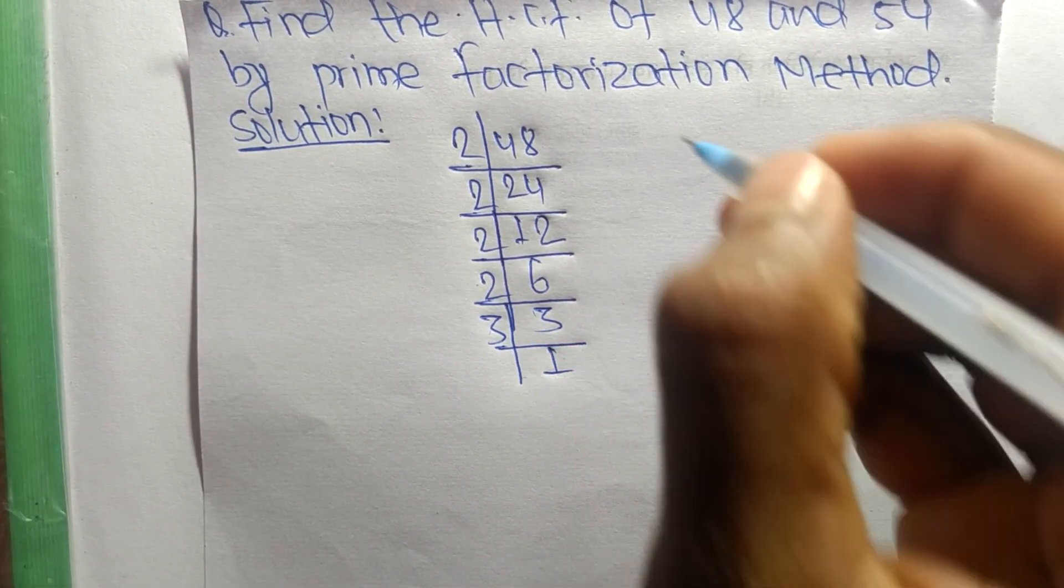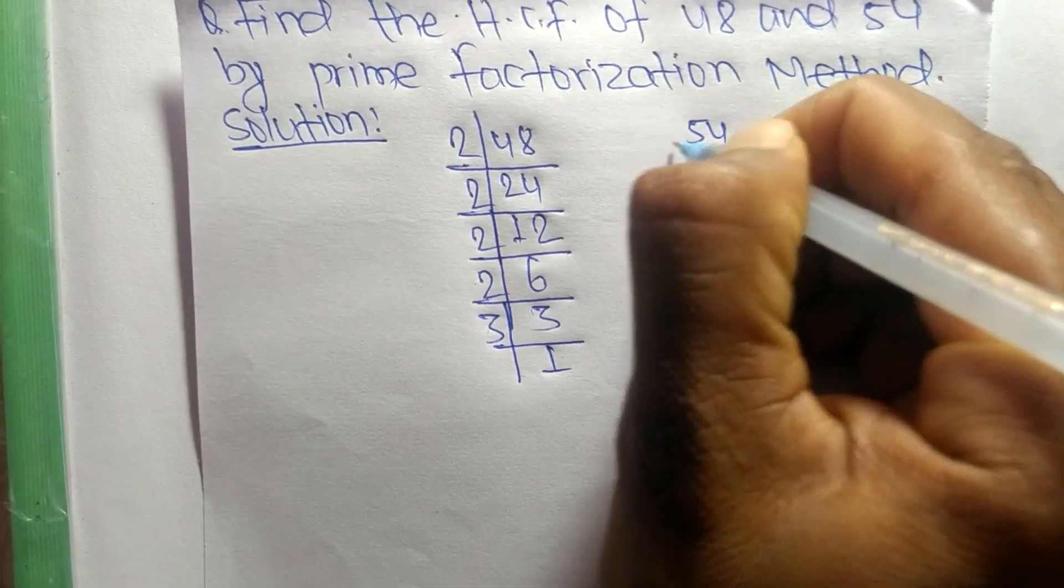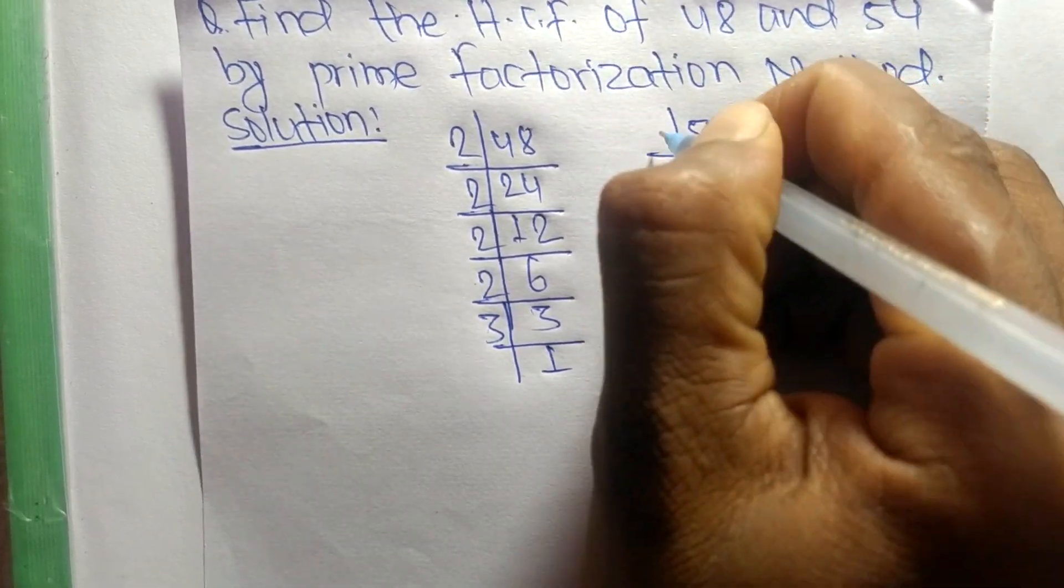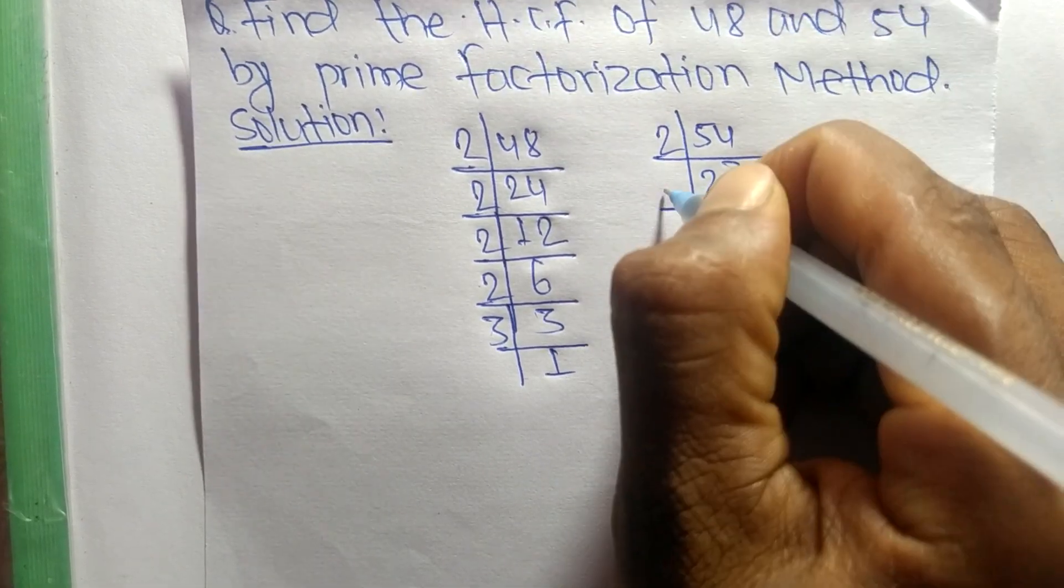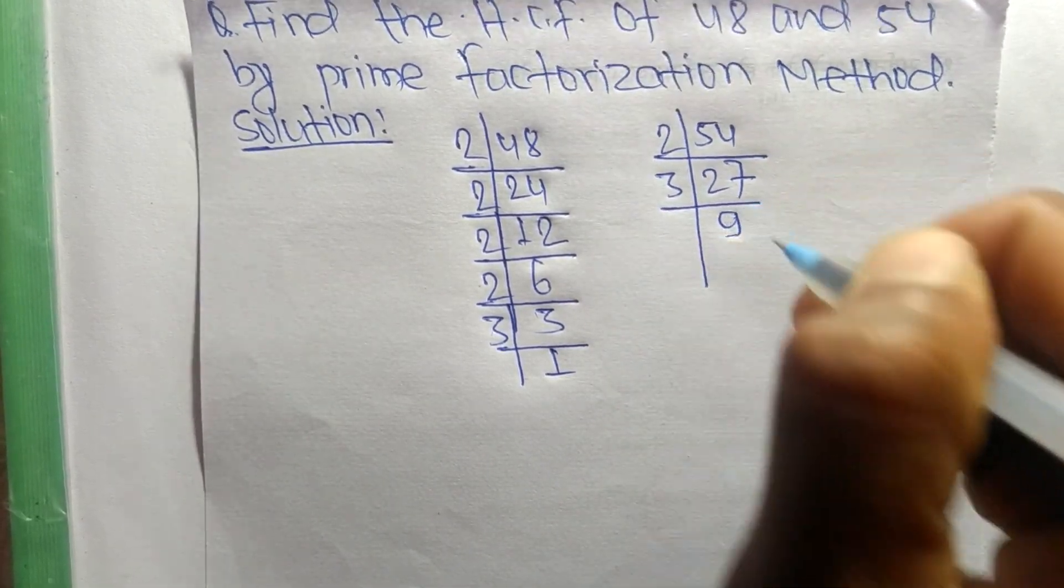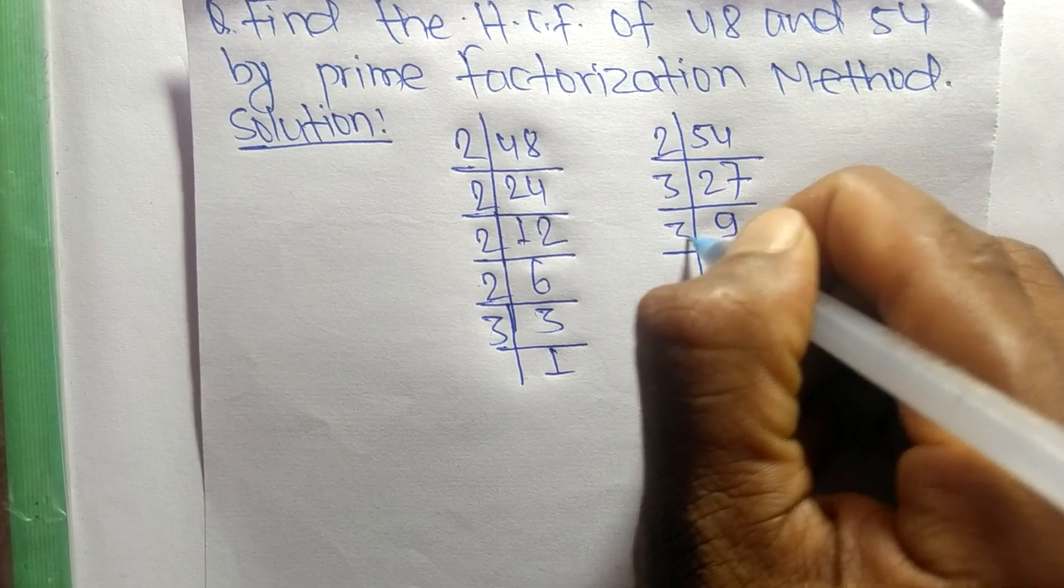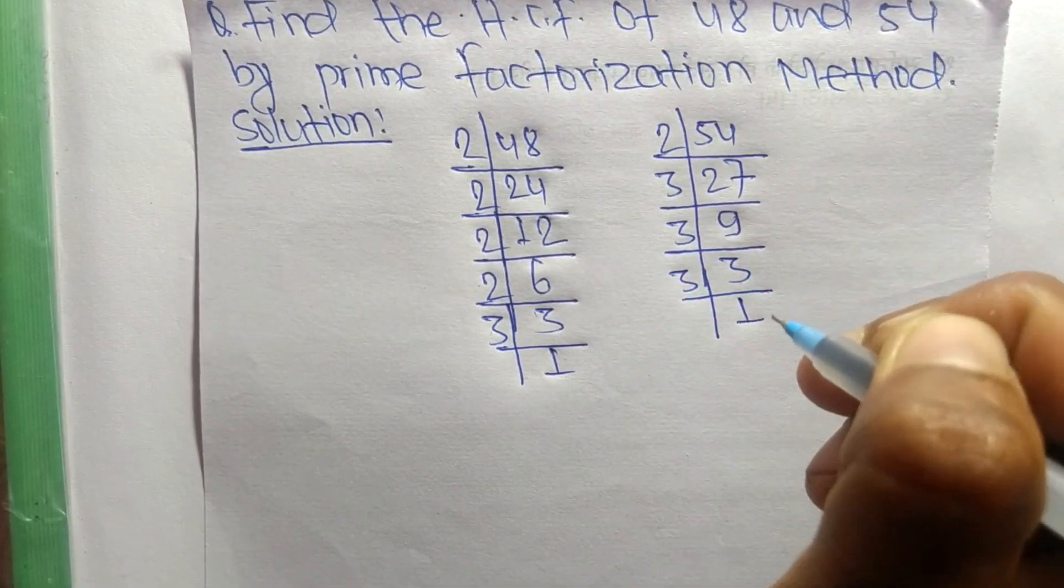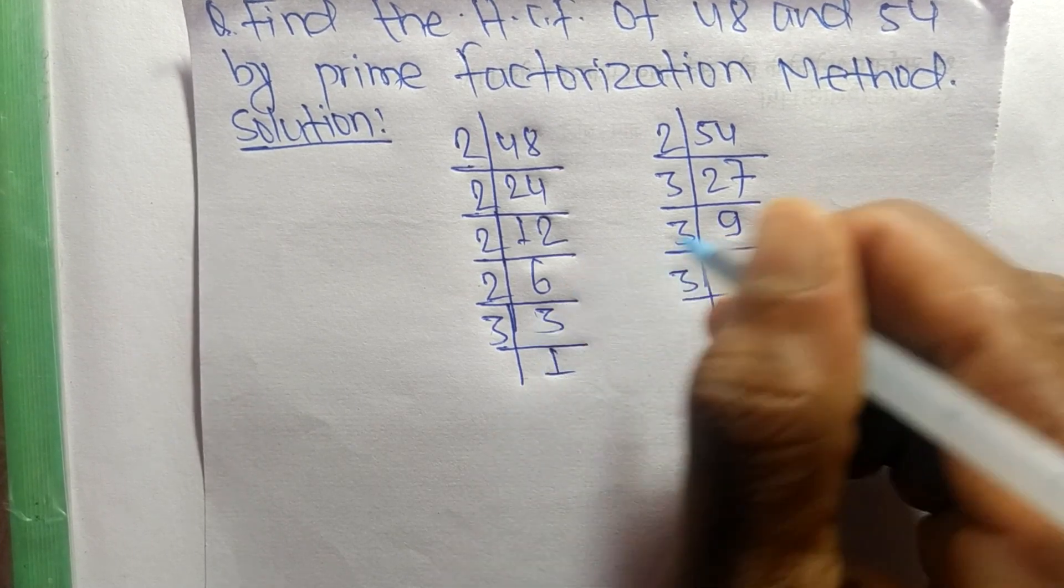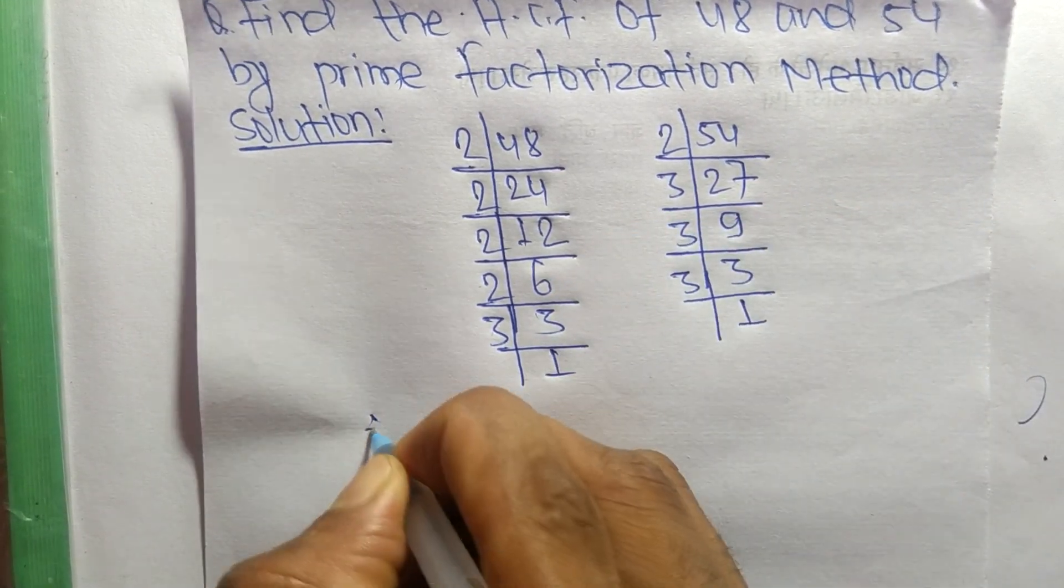Similarly, the prime factors of 54 are: 2 times 27 equals 54, 3 times 9 equals 27, 3 times 3 equals 9, and 3 times 1 equals 3. Now from these prime factors we can write: